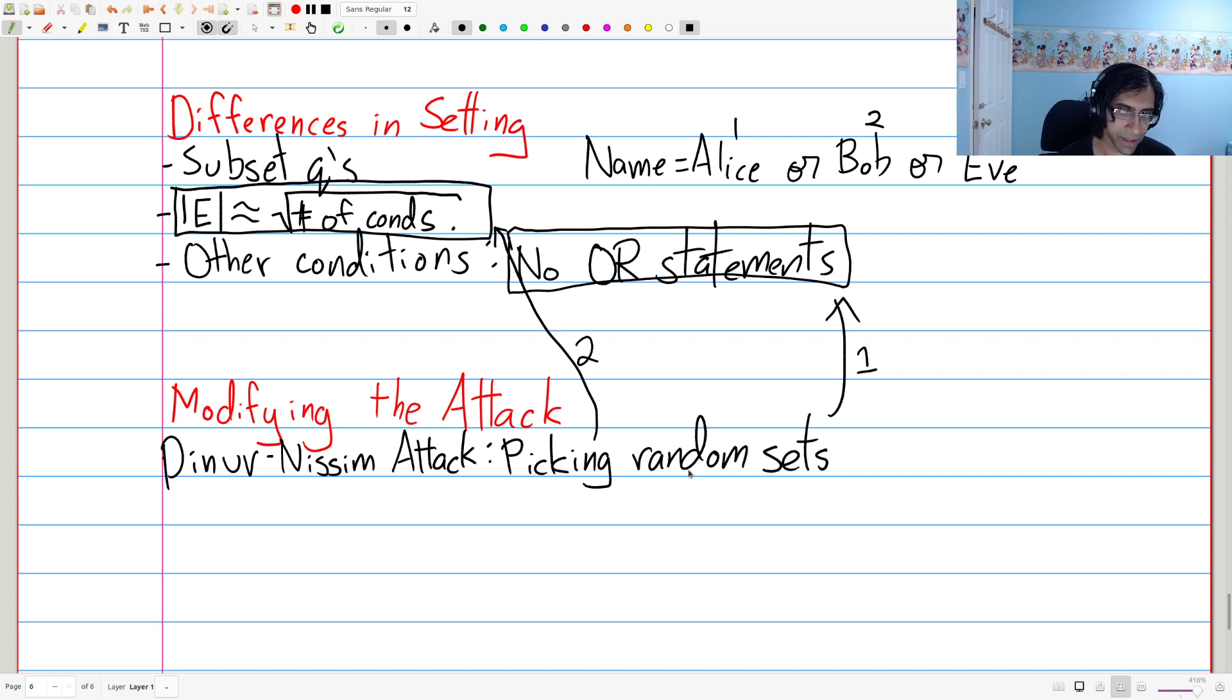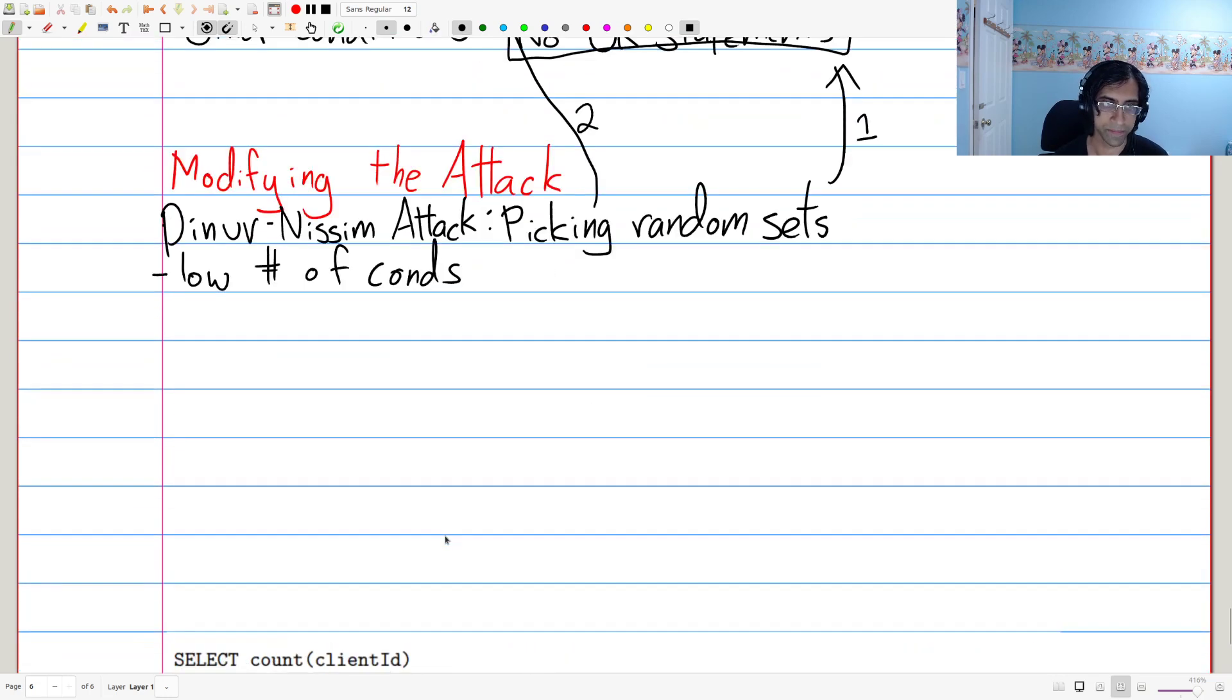And they kind of did it by turning the way that we did it before on its head. The way that the Dinur and Nissim attack, how we conceptualized it with a two-step process. The first step is to pick a random set. And the second step is to generate a query to specify that random set that we chose. On the other hand, the way Cohen and Nissim did it is they just chose a random set of conditions. They specify a random condition, which will specify a random set as a result.